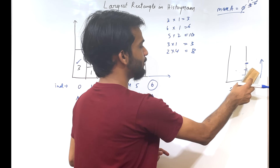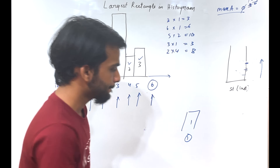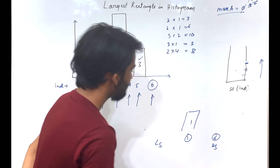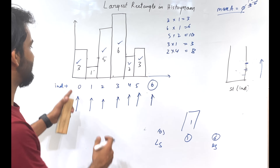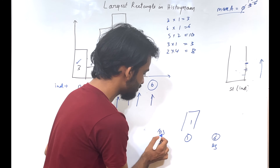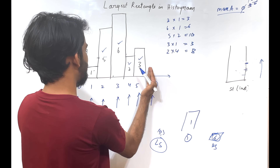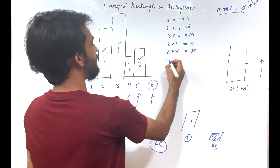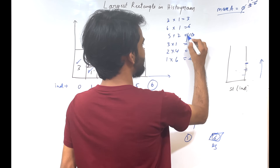Finally, we take index 1 (value 1): right smaller is index 6, and the stack beneath it is empty so the left smaller is treated as index 0. Width = 6 (the entire right smaller index). Area = 1 × 6 = 6. So we've covered every block. The maximum area computed across all elements is 10. We achieved this without doing double passes - just a single pass.